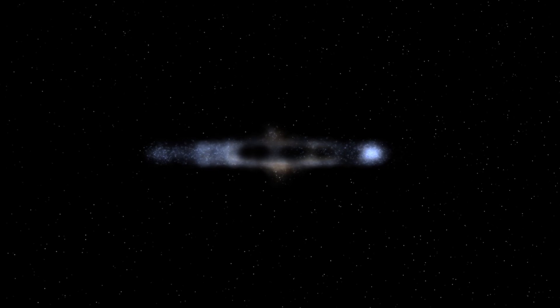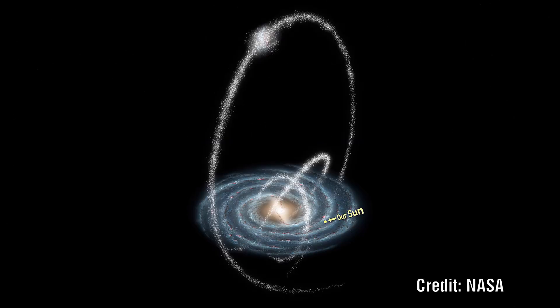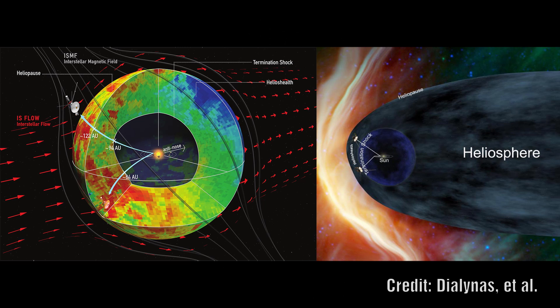We know that many galaxies have these extended disks. We also know that there are streams of stars that seem to surround the Milky Way and other galaxies. Does this imply that the structure of a galaxy is not simply the disk we see but is in fact a much larger structure?